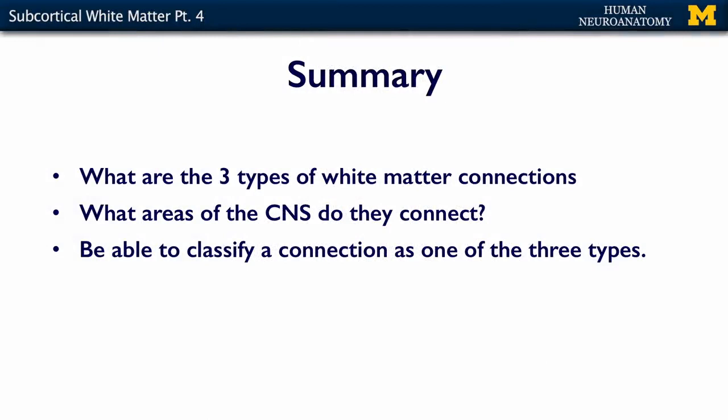What do I want you to know about subcortical white matter? I want you to know what the three types of white matter connections are and what areas of the CNS they connect — so think association, projection, or commissural. You should be able to classify a connection if given a list of different fiber tract names. Once you have these concepts nailed down, you're ready for the assessment.